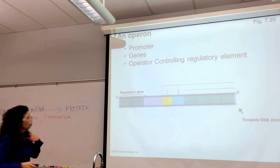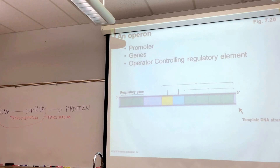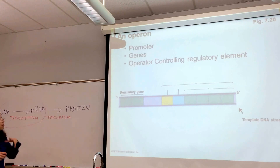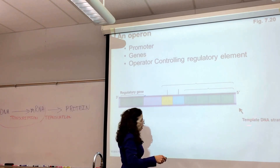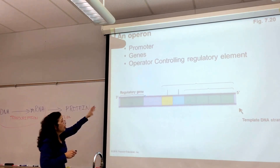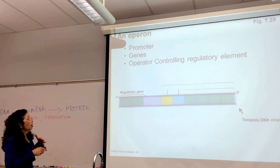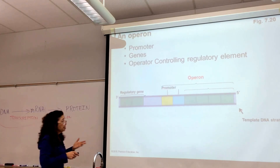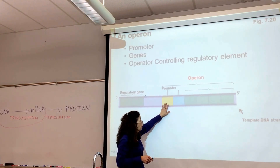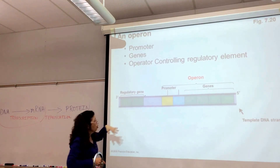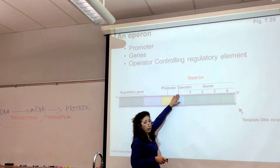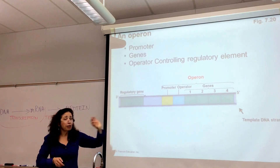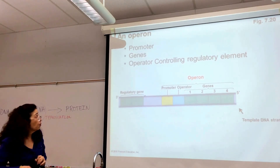Go to figure 7.2 in your textbook. This is what an operon is. Looking at a segment of a template DNA strand, an operon is simply made up of a promoter — a specific sequence of nucleotides — then composed of genes (in this case four genes), and it's made up of one operator. The operator is the controlling regulatory element. We'll also talk about the regulatory gene in a moment.